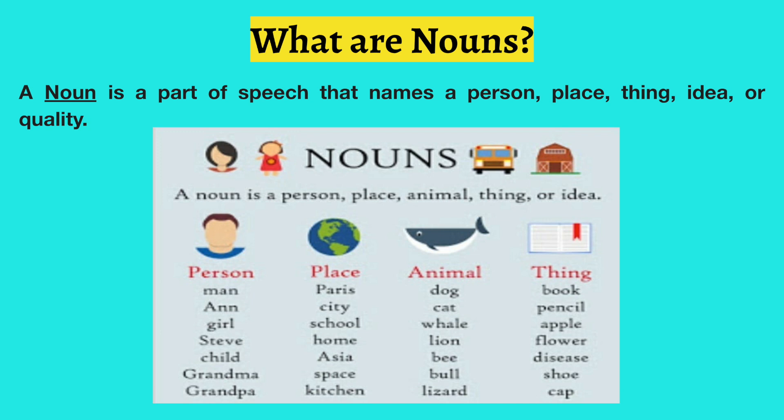Look at the examples here. A person — a man, the name of a girl, Steve, child, grandma, grandpa — they're all people and come under the category of persons. Places include Paris, city, school, home, Asia, space, kitchen. Animals — I'm sure we all know what animals are. Things are anything that we use or see: book, pencils, apples, flowers, diseases, a shoe or a cap.